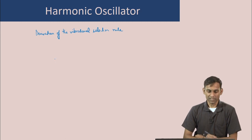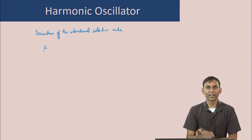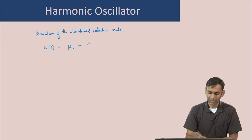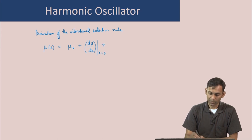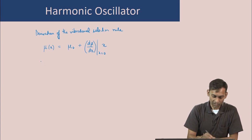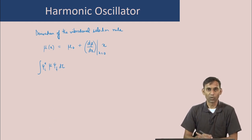In a previous lecture, it was discussed that the dipole moment of a molecule depends on the geometry of the molecule. For a diatomic molecule with one geometrical coordinate x (the distance between the two atoms), the dipole moment can be written as μ₀ + (dμ/dx)|_{x=0}·x + higher order terms. The intensity of a vibrational transition depends on the square of the transition dipole moment integral: ∫ψᵢ*·μ·ψf·dτ, where ψᵢ is the initial and ψf is the final vibrational state.